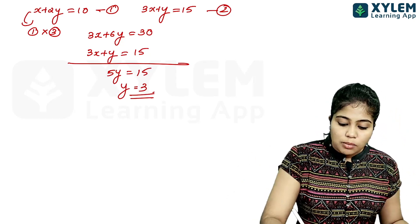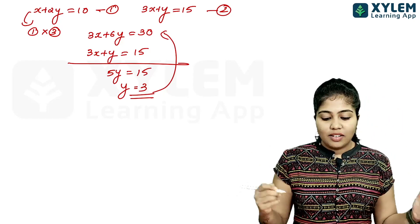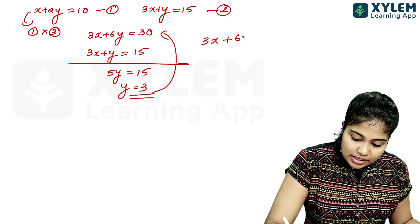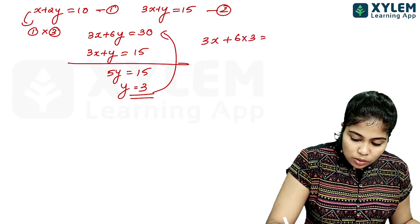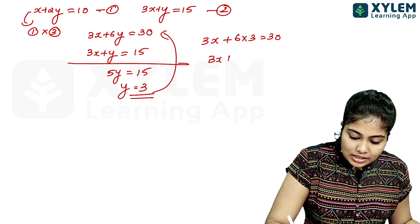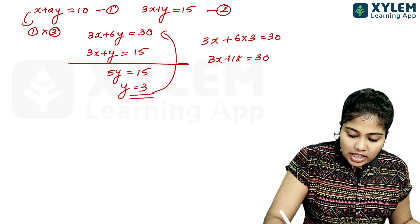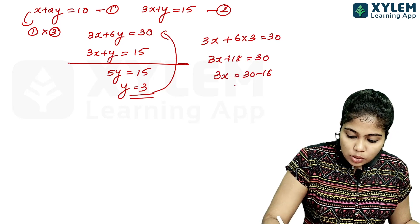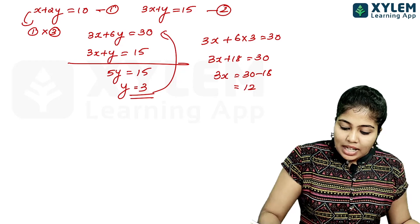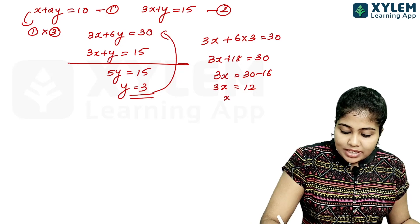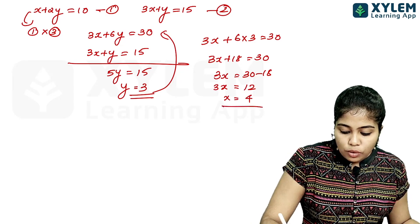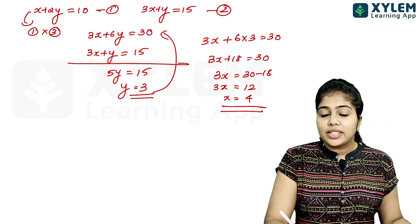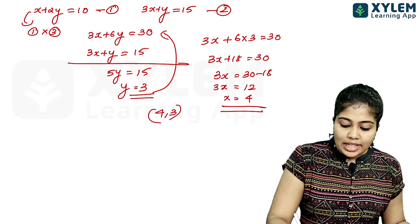Substituting y equal to 3 into the first equation: 3x plus 6 times 3 equal to 30, so 3x plus 18 equal to 30, giving 3x equal to 12, so x equal to 4. The fourth corner point is (4, 3).